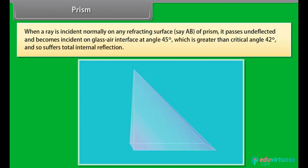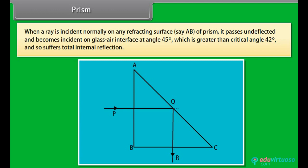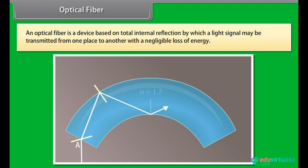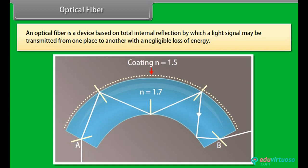Prism: When a ray is incident normally on a refracting surface of a prism, it passes undeflected and becomes incident on the glass-air interface at 45 degrees, which exceeds the critical angle of 42 degrees, causing total internal reflection. A total reflecting prism can deviate rays through 90 degrees or 180 degrees, and can erect an inverted image without deviation. Optical Fiber: An optical fiber uses total internal reflection to transmit light signals from one place to another with negligible loss of energy.